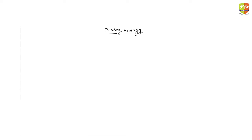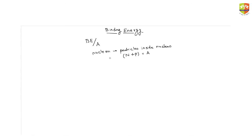I need to find the binding energy per nucleon. Nucleons are the particles inside the nucleus — that is, neutrons and protons. When you add them together you get the mass number. So when you divide the binding energy by the mass number, you get binding energy per nucleon. Binding energy per nucleon is a very good measure to compare the relative stability between two nuclei.